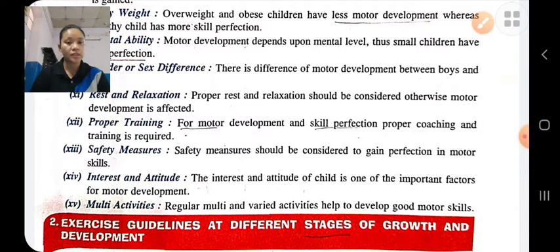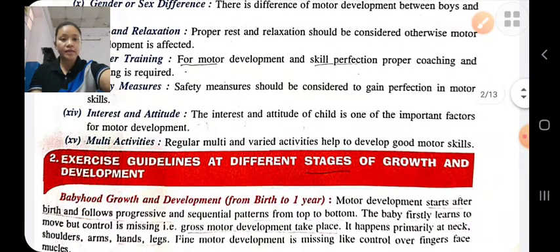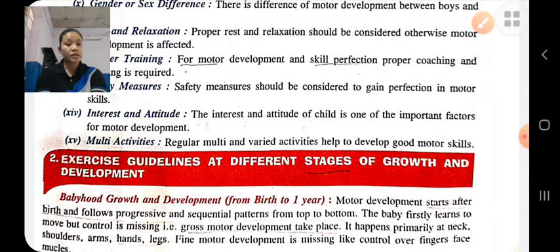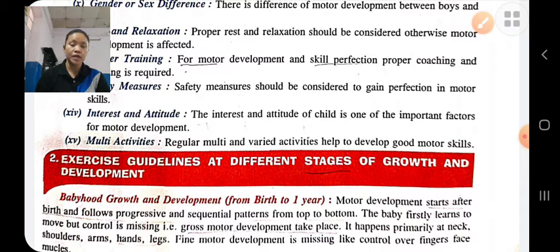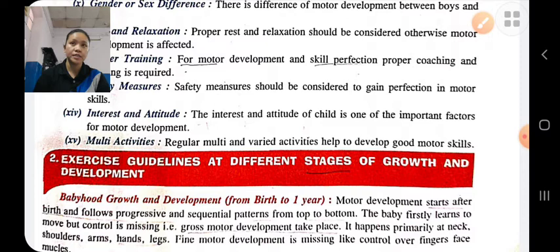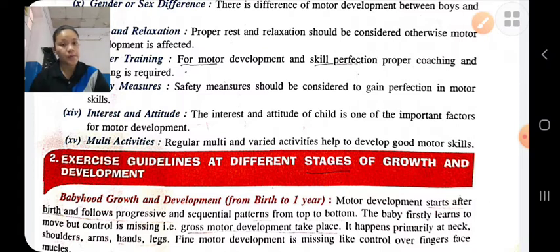These are some factors that affect motor development. Exercise guidelines at different stages of growth and development. Growth and development are two different things. Growth means an increase in size of an individual, like increase in height, weight, etc., and it can be measured. Development is a qualitative change — change in quality and functioning.